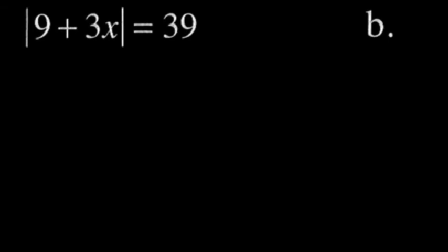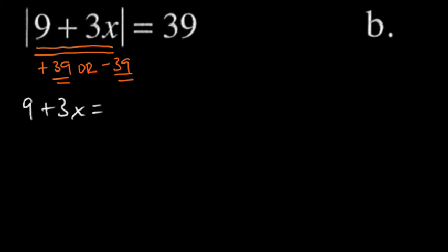So this is the absolute value of 9 plus 3x is 39. Well, there are two things that this 9 plus 3x could be. This could either be positive 39, or it could be negative 39. And the reason why is because if I take the absolute value of positive 39, I get 39. And if I take the absolute value of negative 39, I also get 39. So we're going to write two equations that represent these two pieces of information. So the first thing I'll write down is I'll write 9 plus 3x is, and I'll write the negative one first, negative 39.